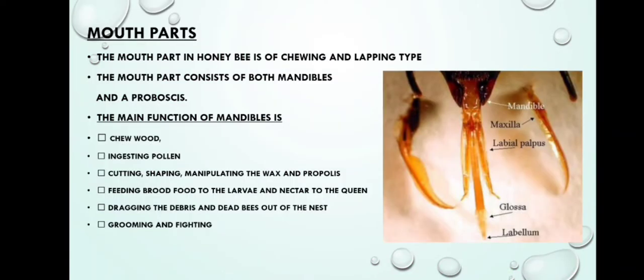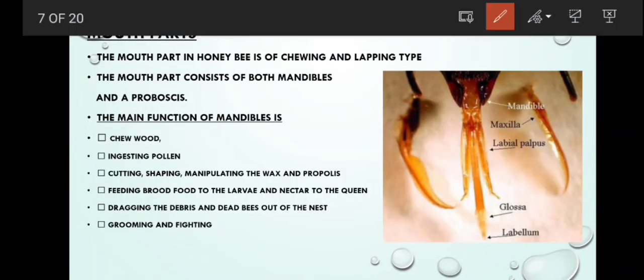Mouth parts in honeybee is chewing and lapping type. Mouth parts consist of both mandibles and proboscis. Mandibles are meant for chewing and proboscis meant for lapping. The main functions of mandible is chew the wood, ingesting the pollen, cutting and shaping and manipulating the wax and propolis, feeding the brood food to larvae and nectar to queen, and drag the debris and dead bees out of the nest and for grooming and fighting.